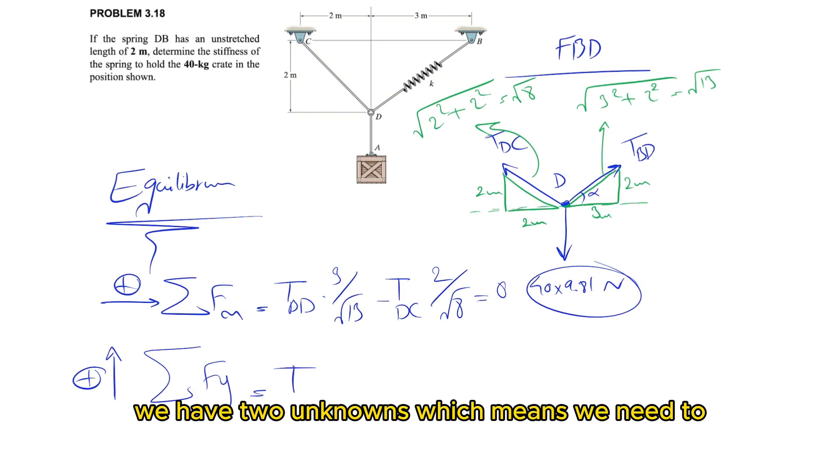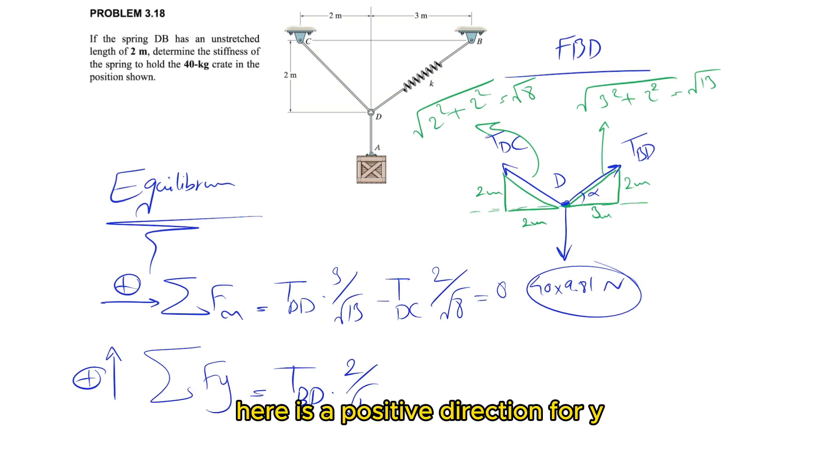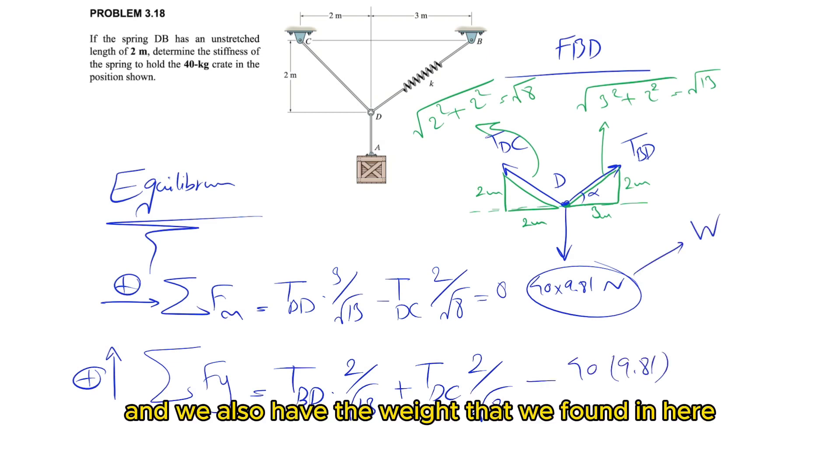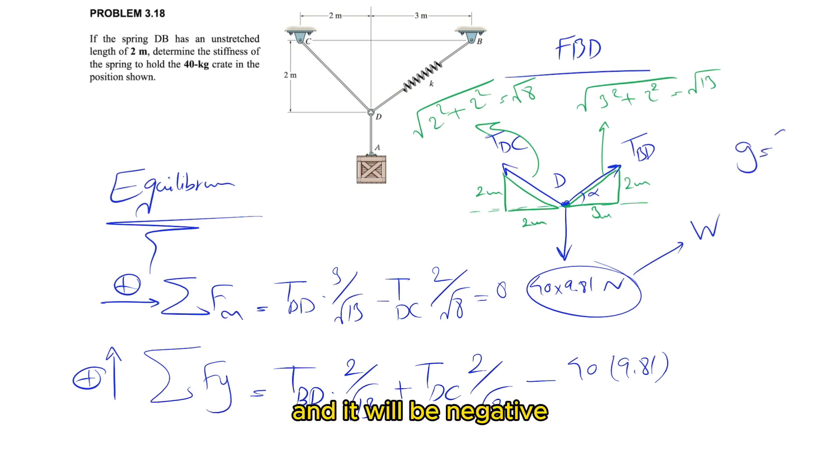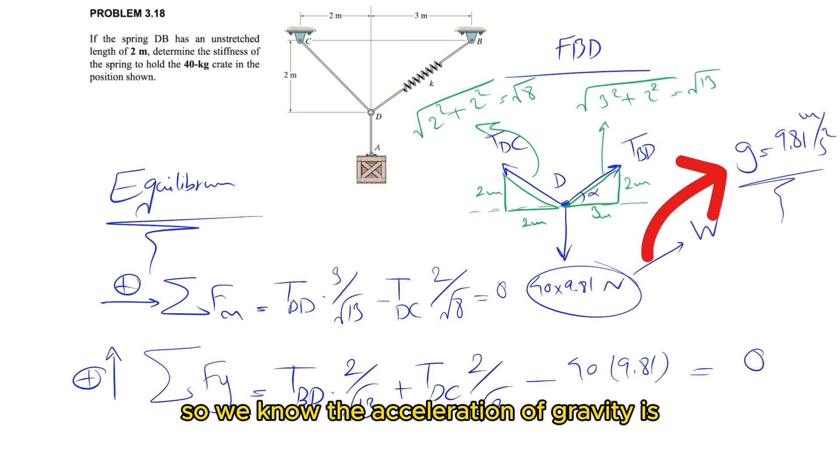We have two unknowns, which means we need to move on to our y-equation. We'll have T_BD times 2 over square root of 13 plus T_DC times 2 over square root of 8, and we also have the weight, which will be negative 40 kilograms times the acceleration of gravity.